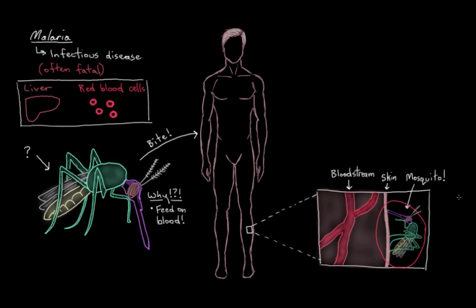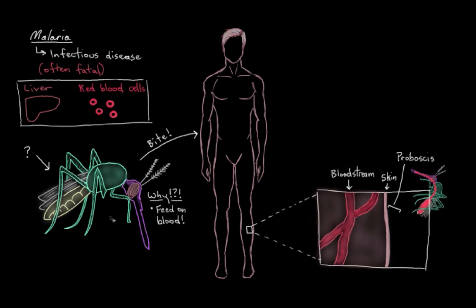To do that, she will poke her little proboscis — that's what this pointy mouth thingy is called, the proboscis — through our skin to access all of our blood vessels underneath. And from there she'll start to suck up some blood and fill up her little thieving tummy. Then she'll take off, all satisfied. And that's not usually a problem for us.